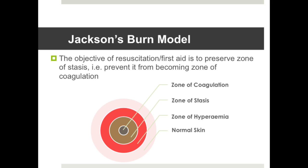On this slide, you can see a graphical representation of the burns model. It is important to note that this is a 3D structure, where the zone of stasis is around as well as deep to the zone of coagulation. Similarly, the zone of hyperemia is around and deep to the zone of stasis. The objective of resuscitation and first aid is to preserve the zone of stasis — to prevent it from becoming the zone of coagulation.